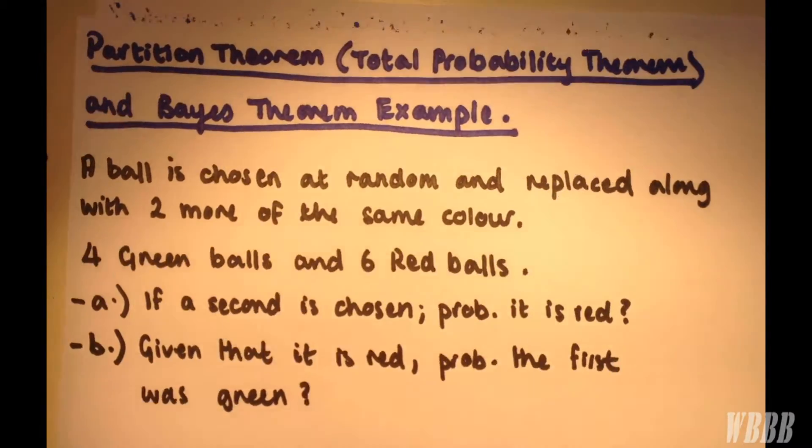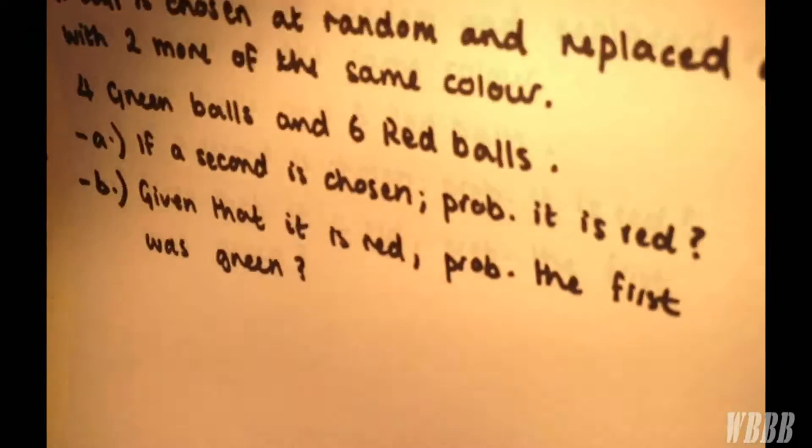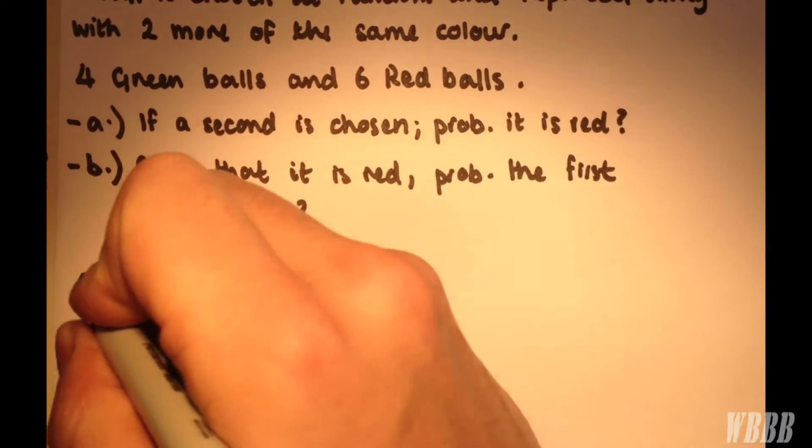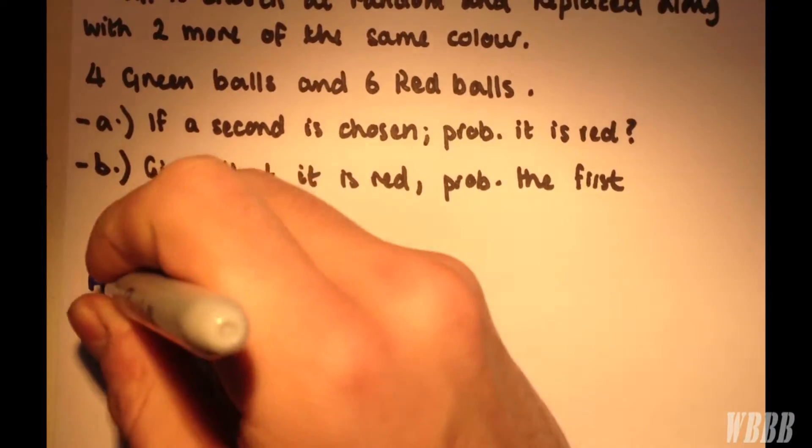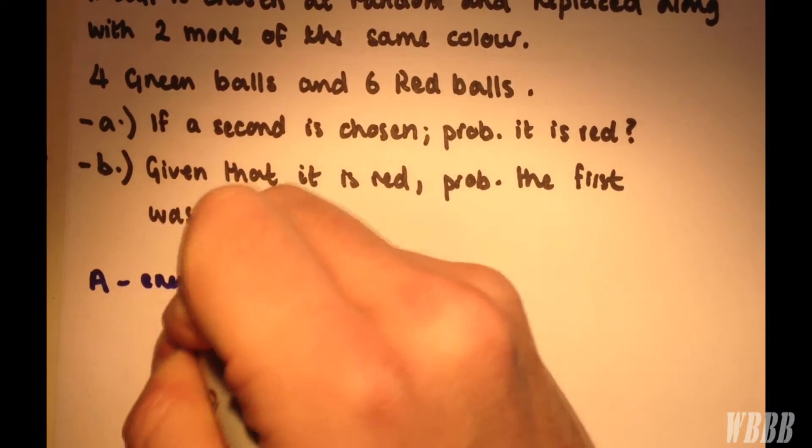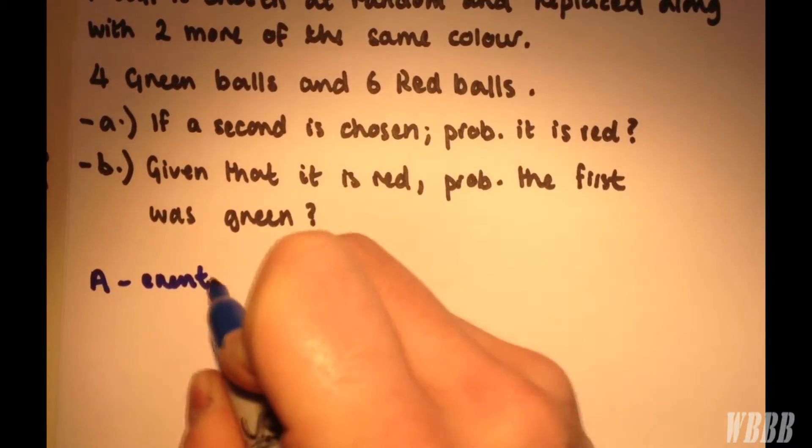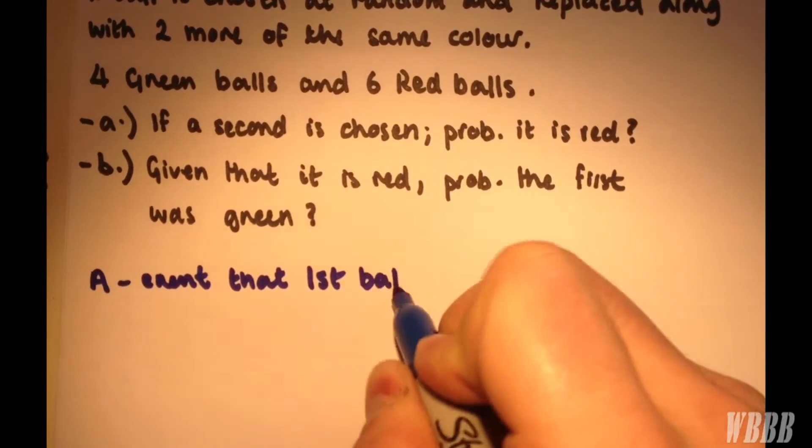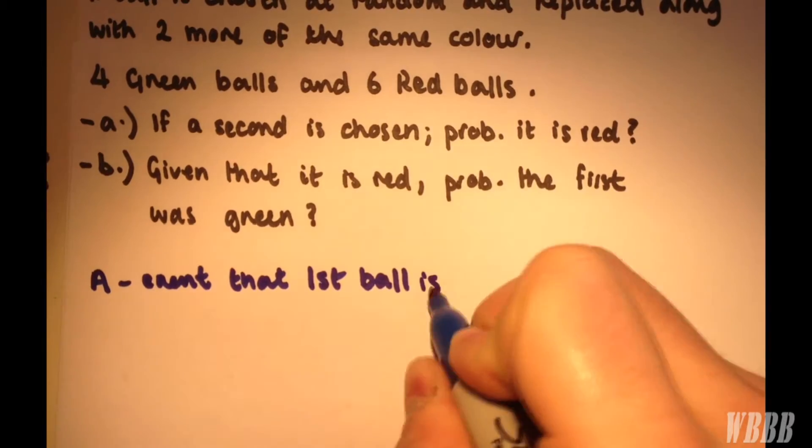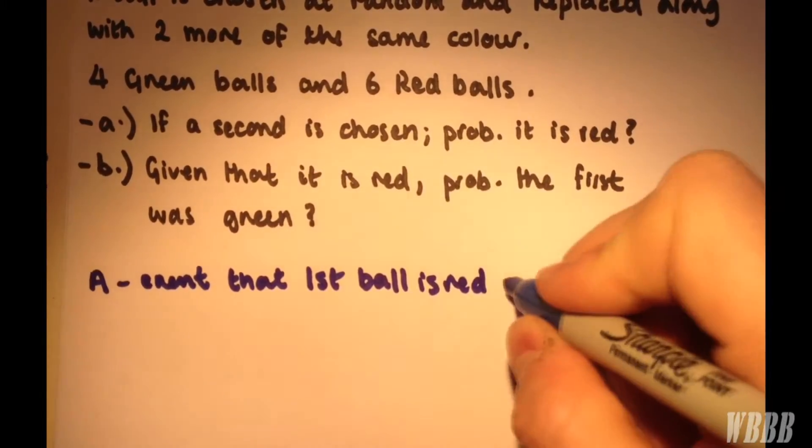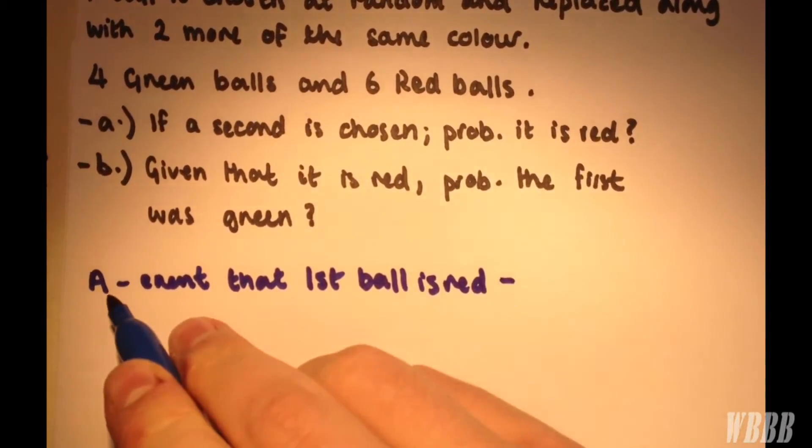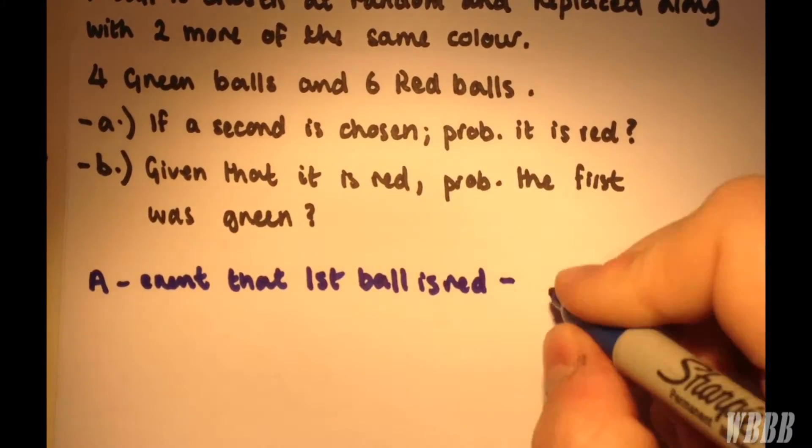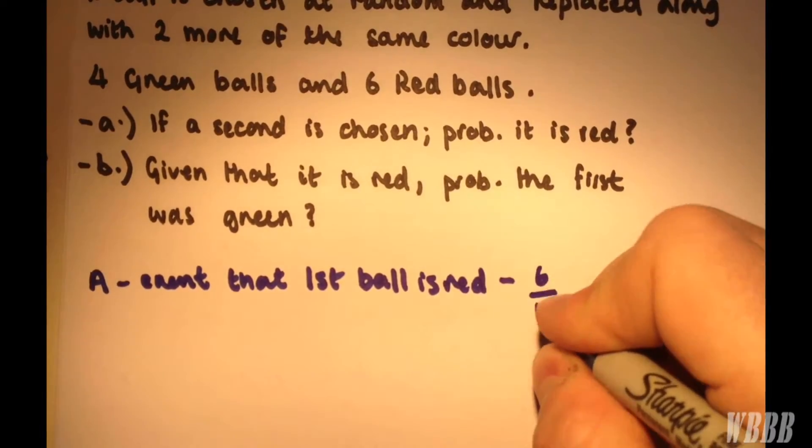First, we're going to create two events. Event A is the event that the first ball is red. We already know the probability of event A because there are six red balls in a bag of ten, so that's 6/10.